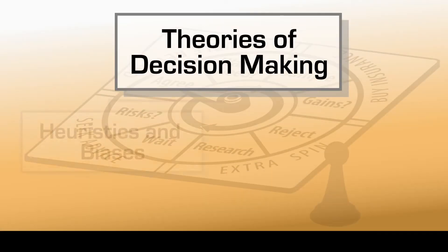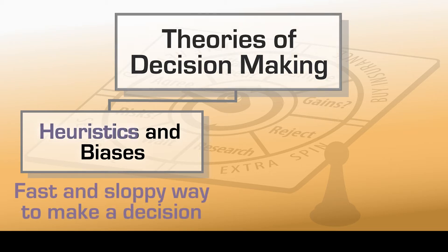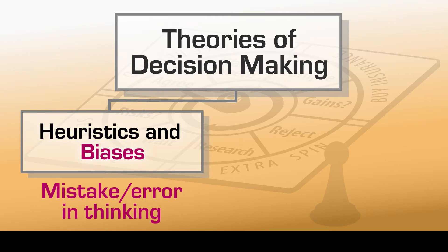There are two main theories of decision making. The first is called heuristics and biases, and the name alone can tell you a lot. A heuristic is a kind of fast and sloppy way of making a decision, and a bias is a mistake or an error in your thinking. So heuristics and biases in a nutshell means that these researchers think that people aren't very good decision makers.